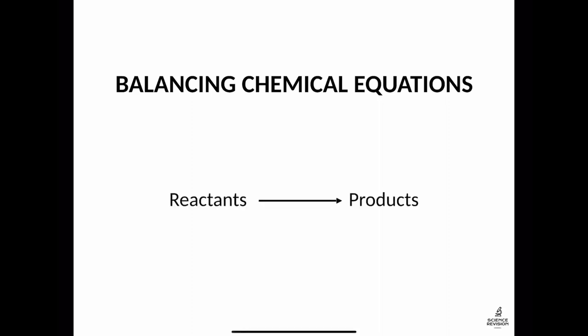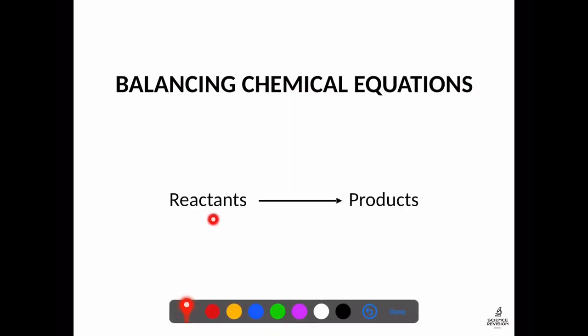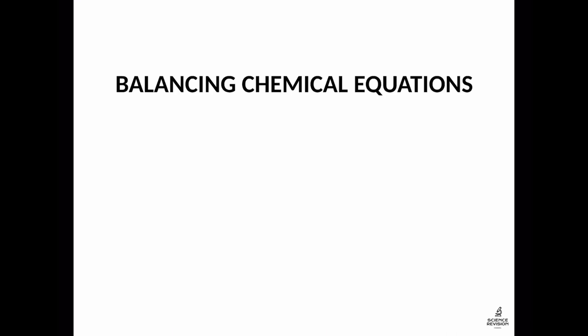In chemical reactions we have reactants, which react together to form products. We use this arrow sign in the middle to show that the reactants have formed these products. Step one: if you're ever asked to write out an equation — whether it's a word or symbol equation — make sure you use an arrow rather than an equals sign, because the reactants do not equal the products; the reactants form the products.